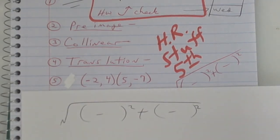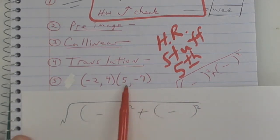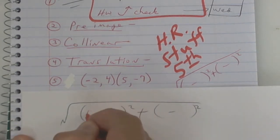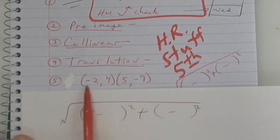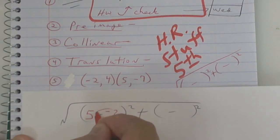Now you put your x's in here. So what's my x in this one right here? Five. What's my x in this one right here? A negative two. That's going to be a double.